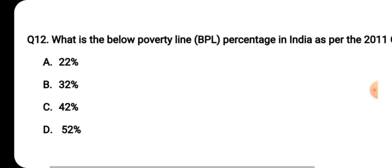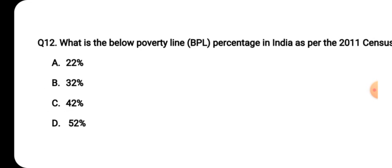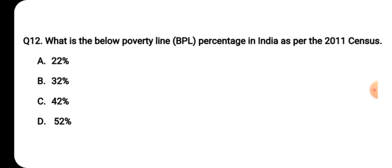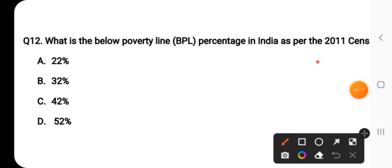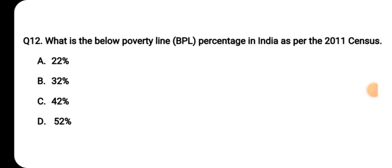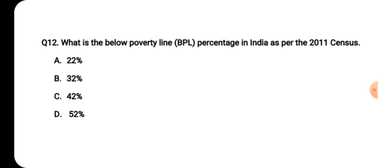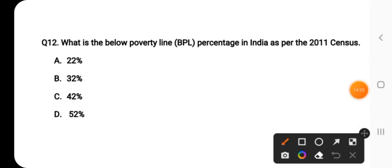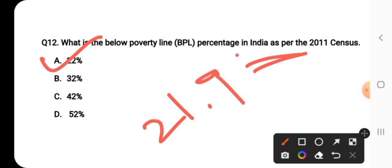Question number twelve: what is the below poverty line percentage in India as per the latest data, which is the 2011 census? The right answer is option A — 22 percent, or more precisely 21.9 percent.